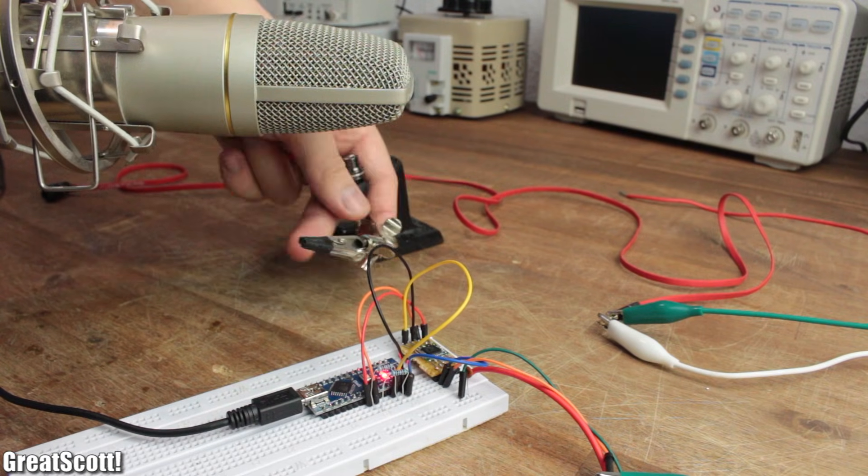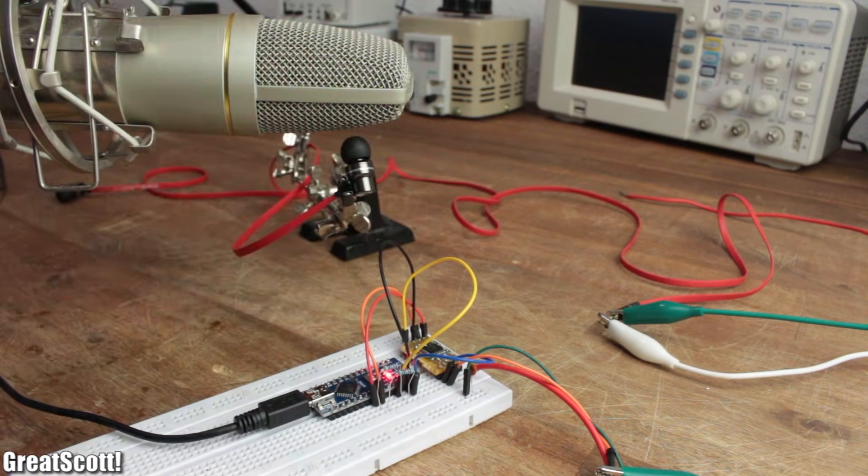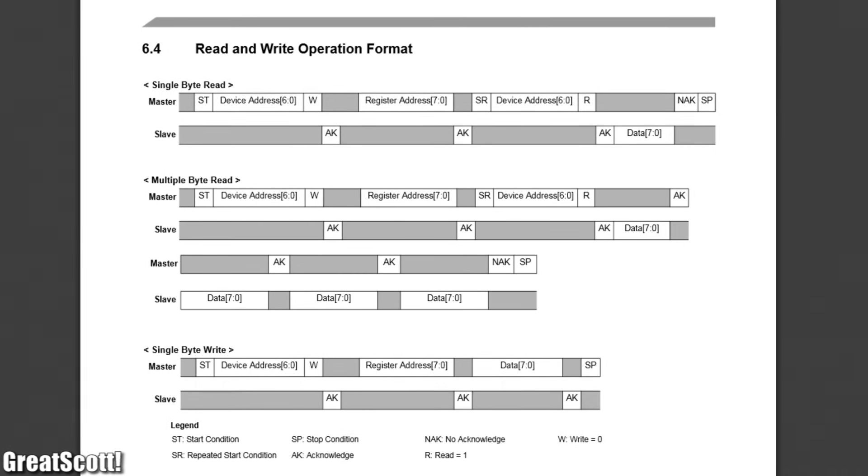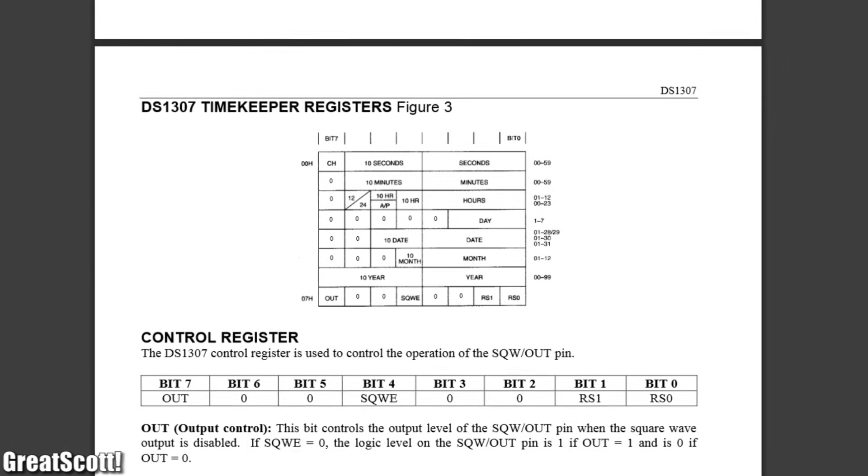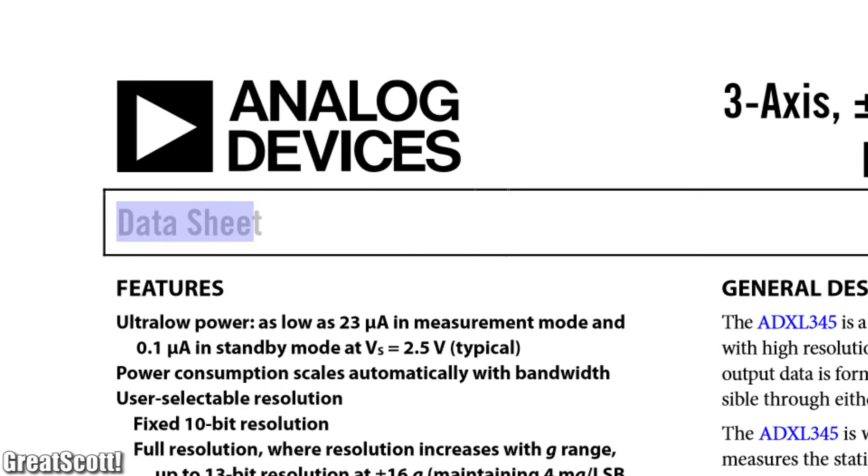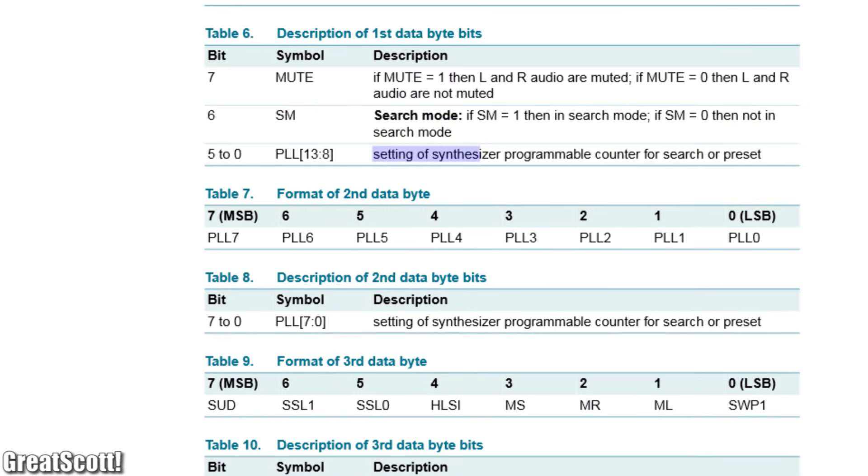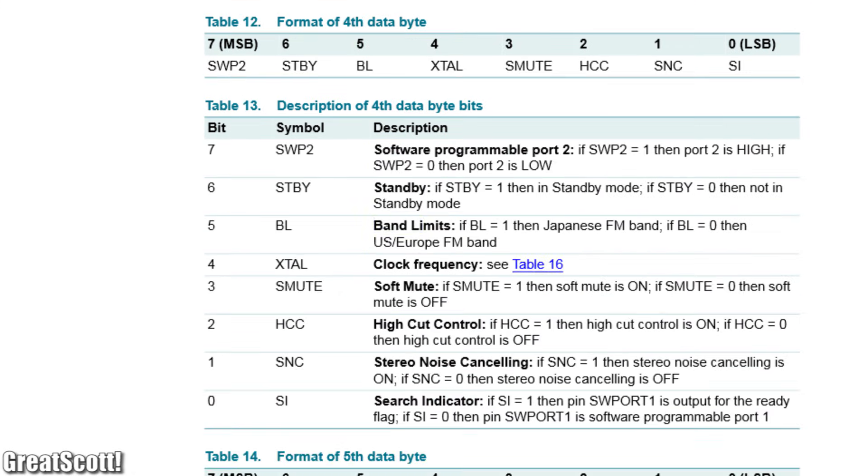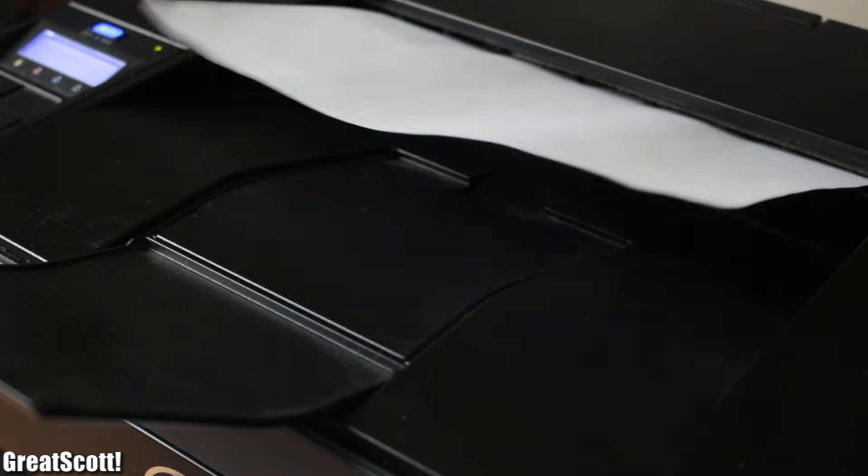After powering up the circuit, it was obvious that the audio output would deliver nothing useful because the correct code is still missing. The most important resource of information when it comes to I²C devices or generally every IC is the datasheet. There we can find what kind of bits or high-low states we have to send in order to tune in a certain frequency, mute the audio, or choose the correct region. So it's definitely a good idea to print out those pages.